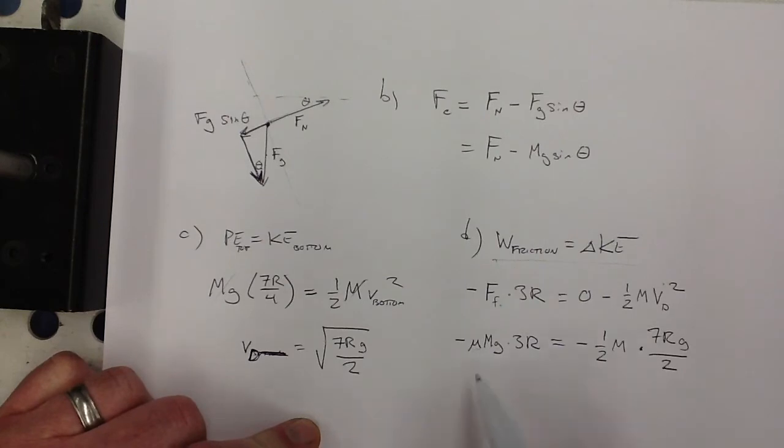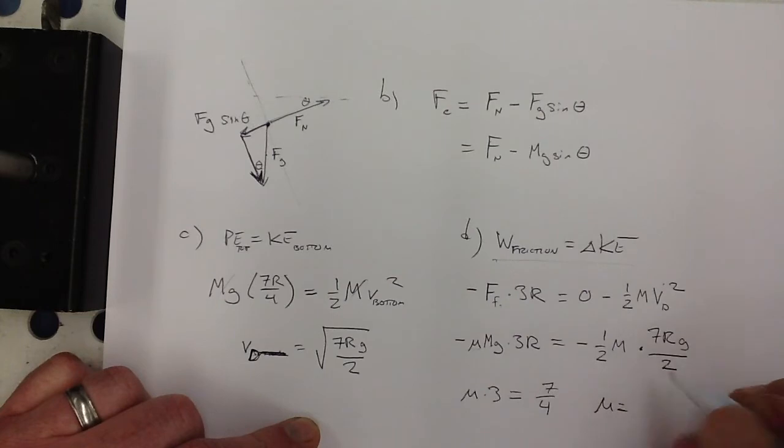All right. So, let's see if we can clean that up. The minus signs cancel out. The M's cancel. The G's cancel. So, I've got 3. Oh, and the R's cancel too. So, I've just got a 3 over here. And then, I've got a 7 over 4 on that side. All the letters cancel out, which is good. They want us to just get a number for this.